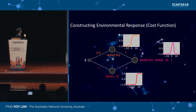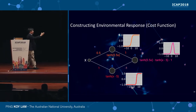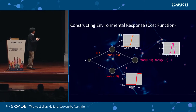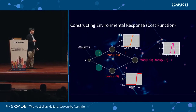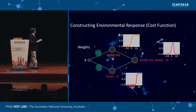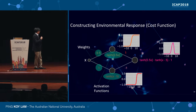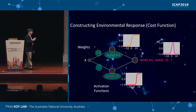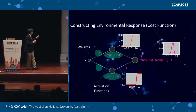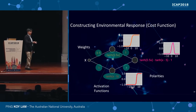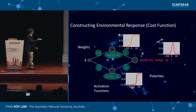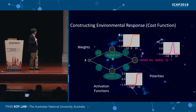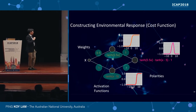Here's an example of constructing an environmental response — say, a pulse. We start with inputs, put weights on them — the top one is 0.5 and the bottom one is 1 — then choose an activation function, in this case hyperbolic tangent, and time-shift the trigger. The bottom function is triggered slightly later than the top one, and by recombining and swapping the polarity of the trigger function, you end up getting a pulse at the output. So this is a two-neuron network.